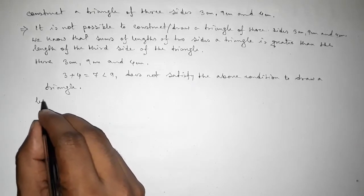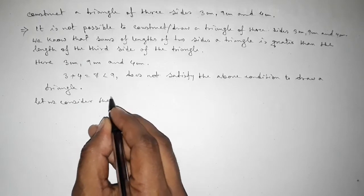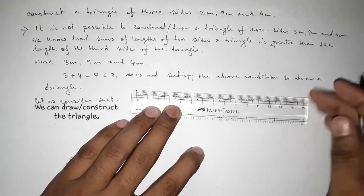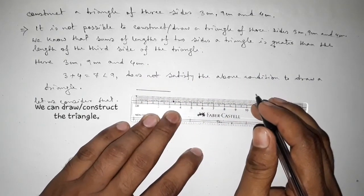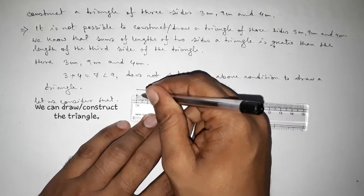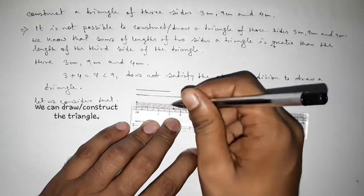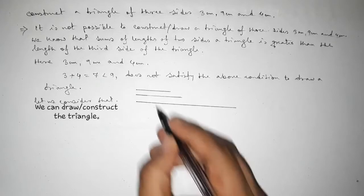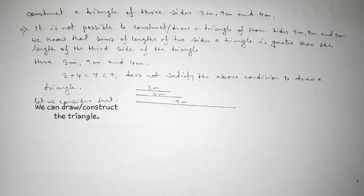Now let us assume we can construct a triangle with these three sides and demonstrate it. Drawing the first side of three centimeter, then the second side of four centimeter, and the last side of nine centimeter. So we have three centimeter, four centimeter, and nine centimeter.